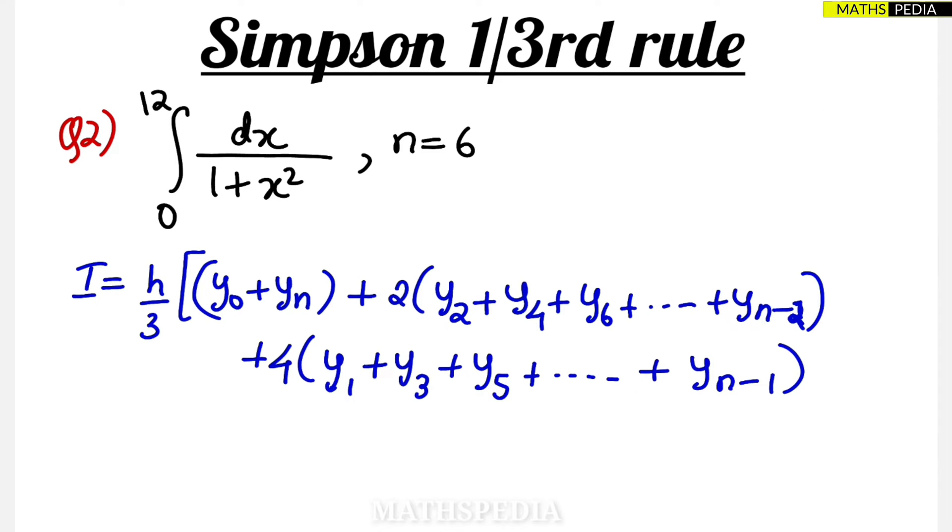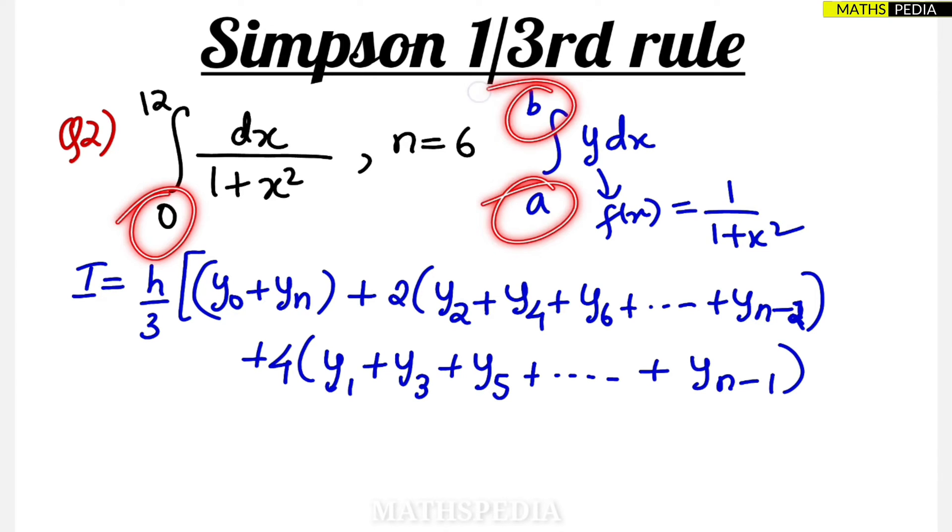Now here we have to compare with the standard form which is nothing but a to b y dx, y is nothing but the function of x. So we get to know that y here the function is nothing but 1 by 1 plus x square. a value is nothing but 0, b value is nothing but 12, and y value which is nothing but the function f of x is nothing but 1 by 1 plus x square.